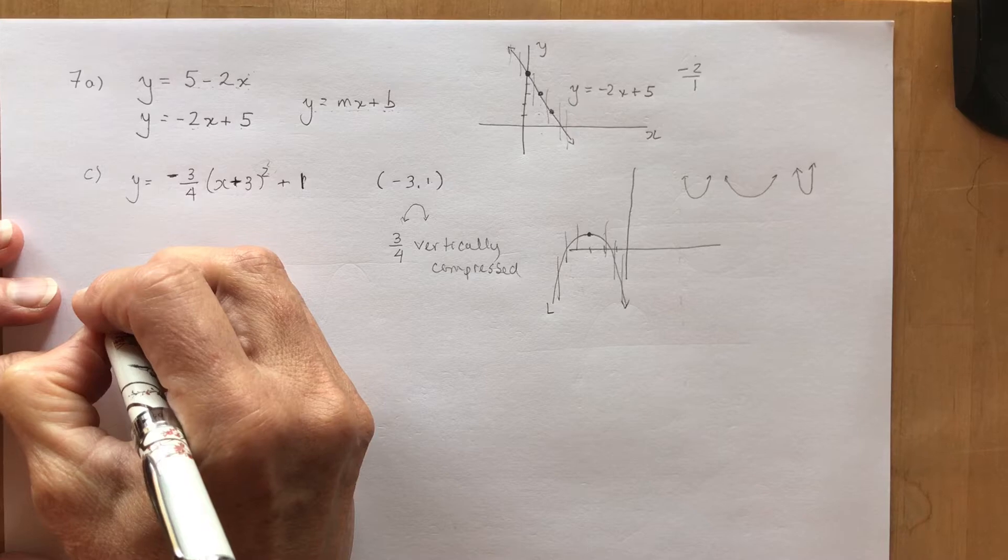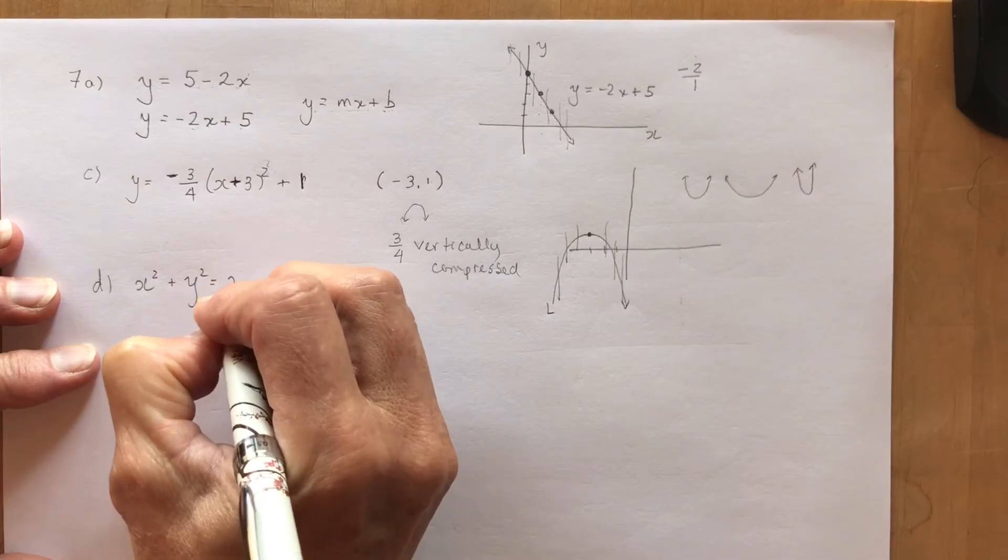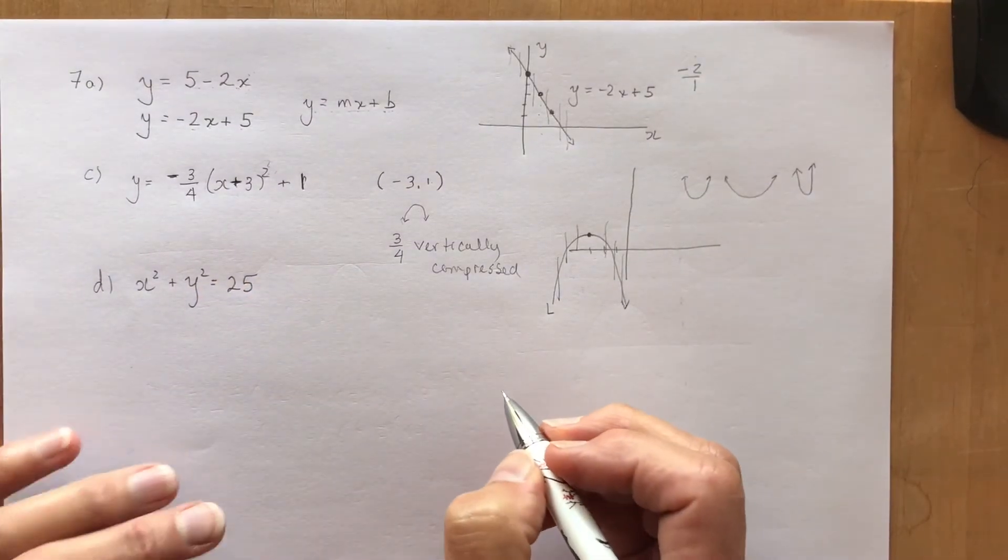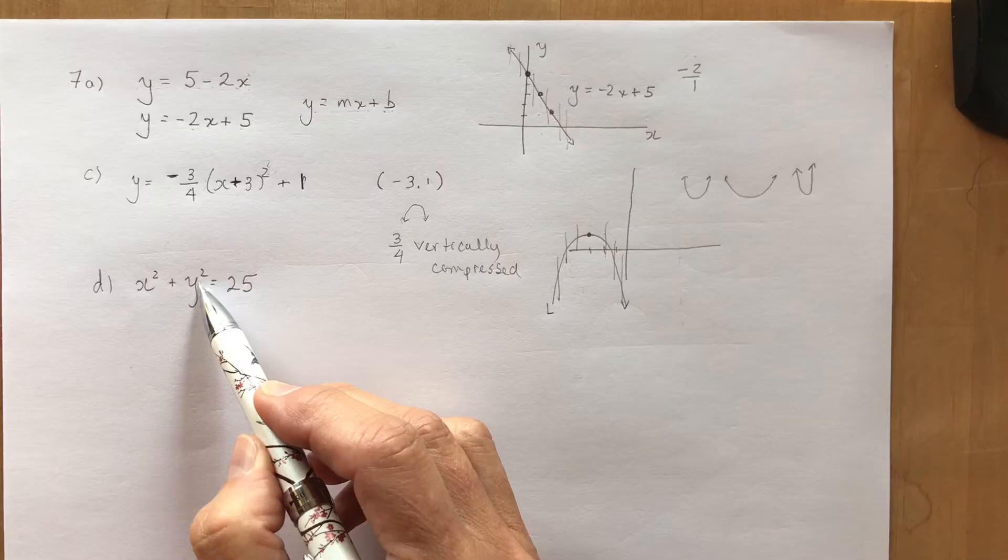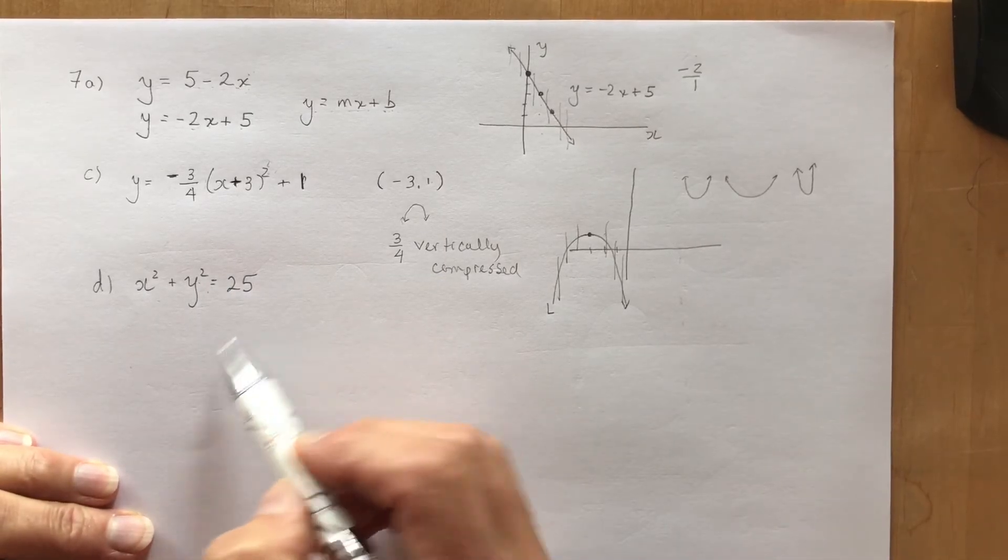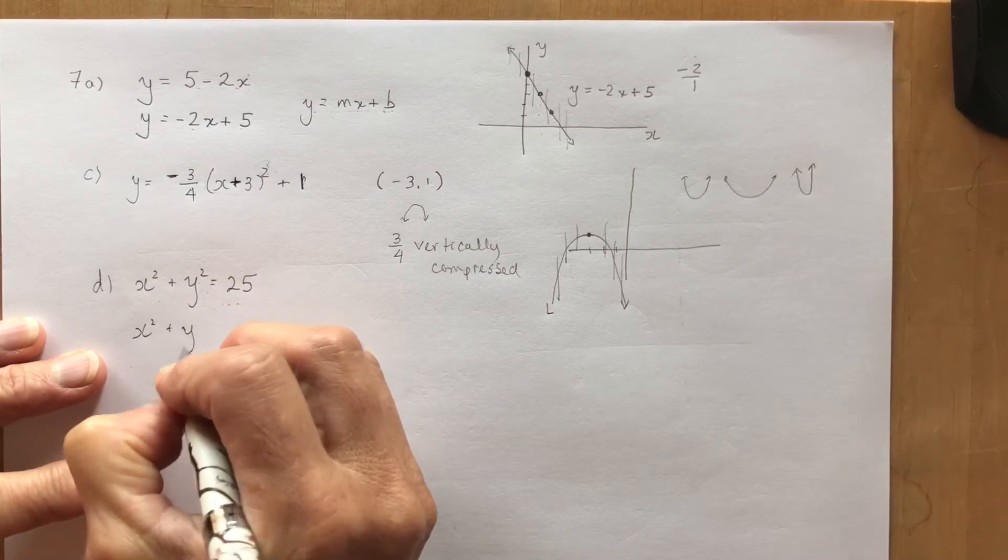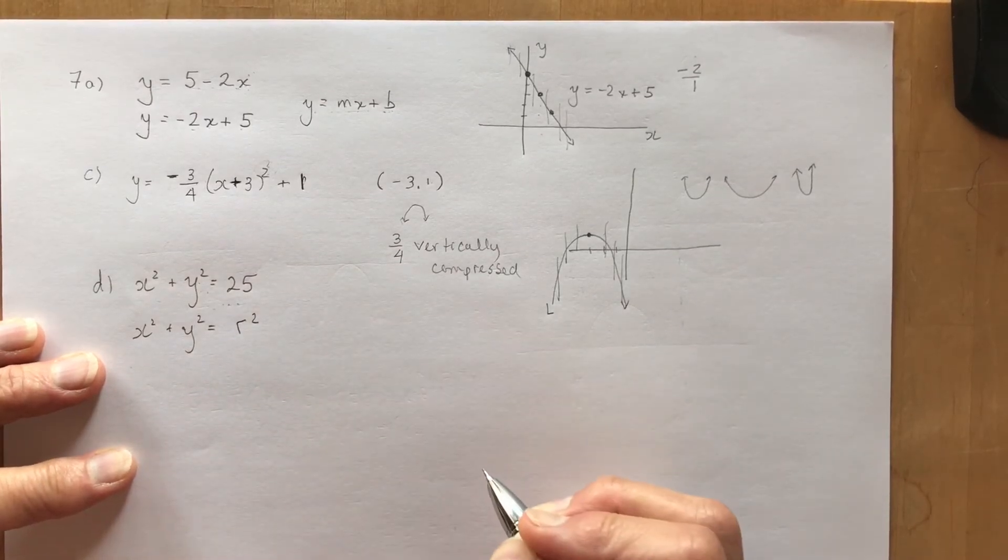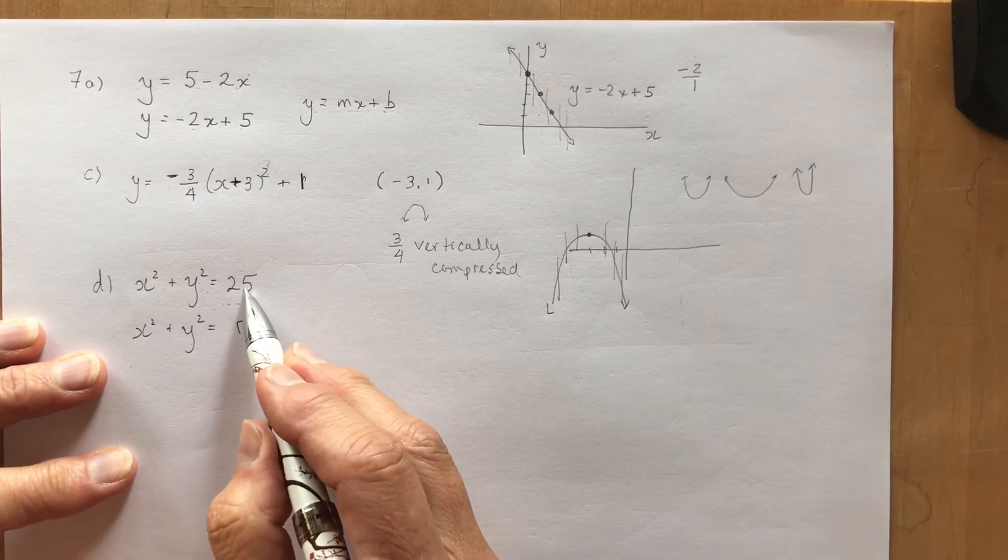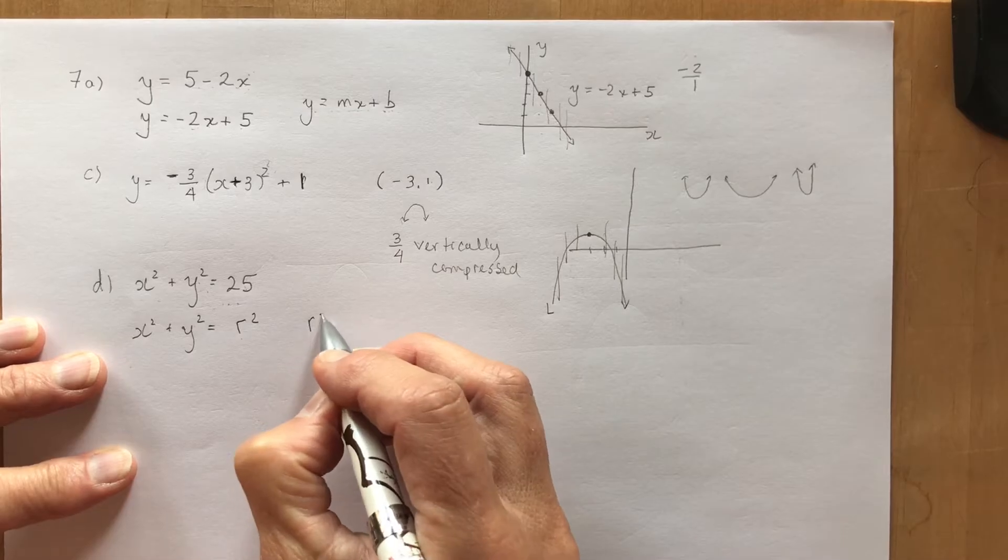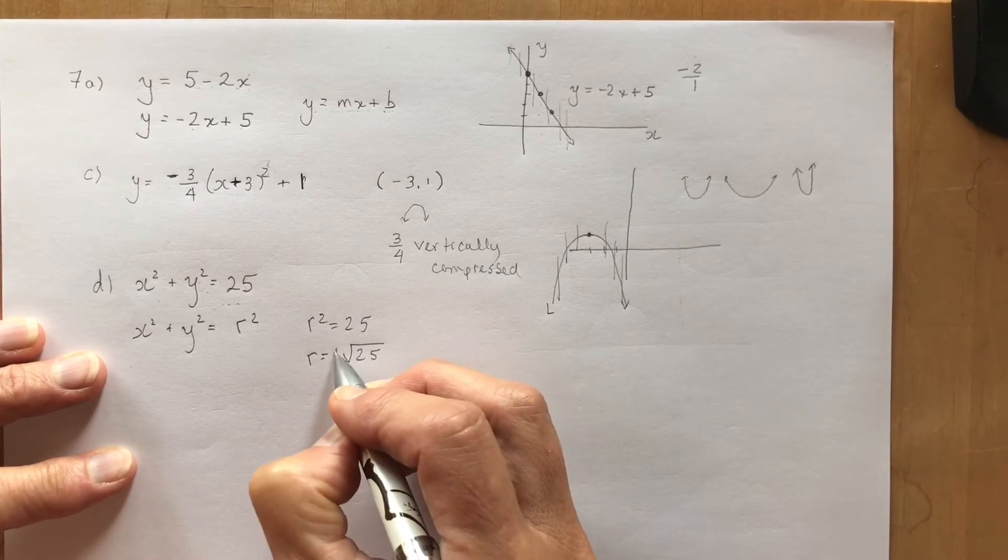Now the one that's really tricked everyone in my class was this one: x squared plus y squared equals 25. I bet some of you are saying this has a degree 2, this has a degree 2. Well you should remember from grade 10 math, this is from the equation x squared plus y squared equals r squared. It's a circle with a radius of the square root of 25.